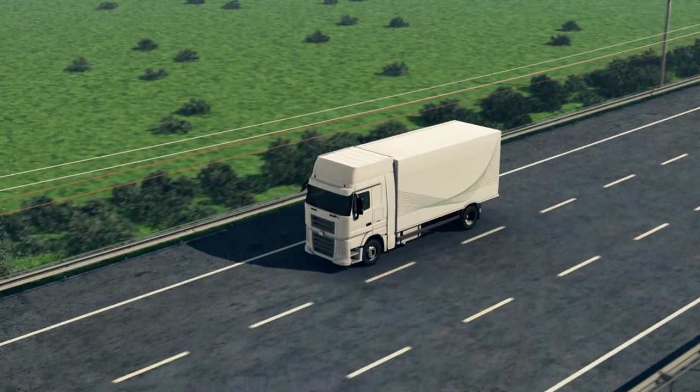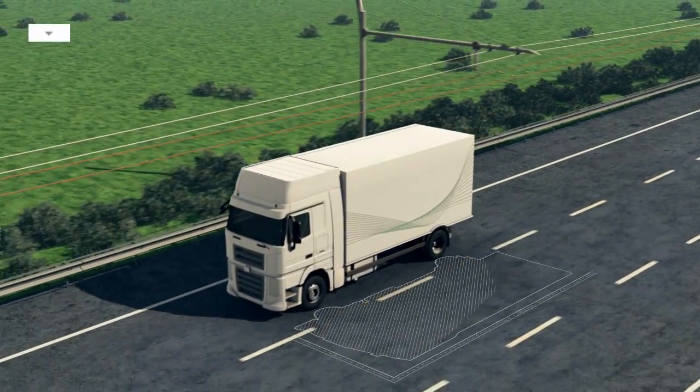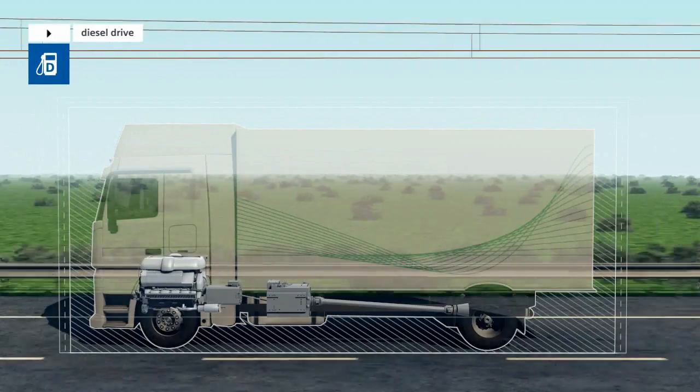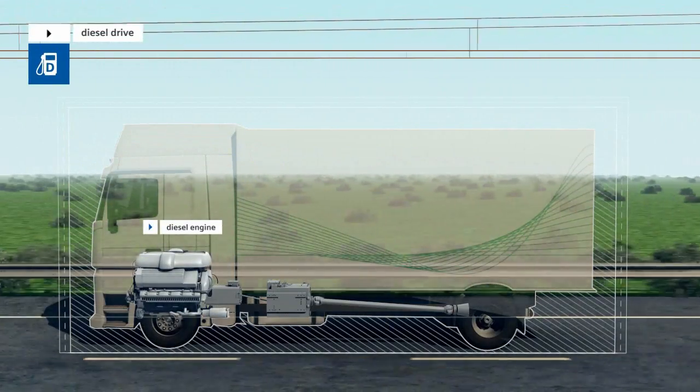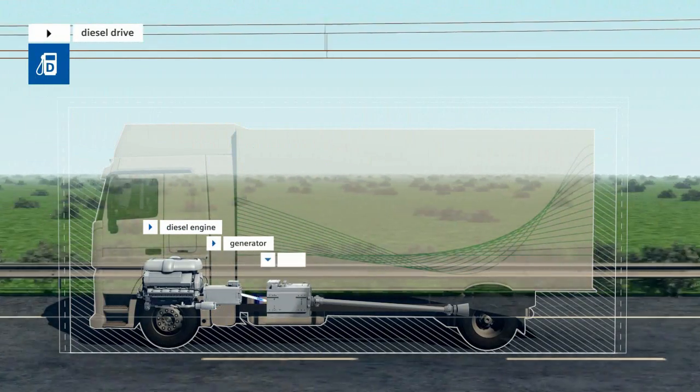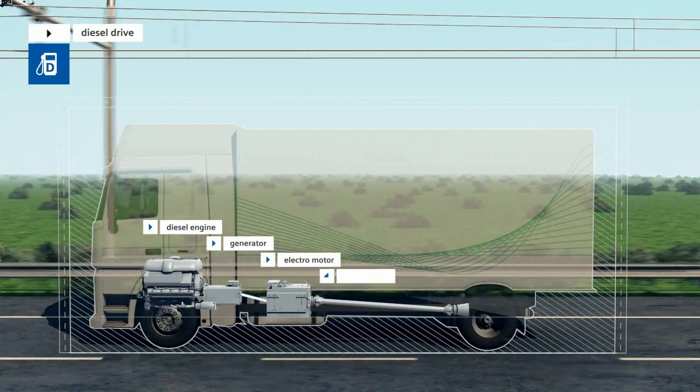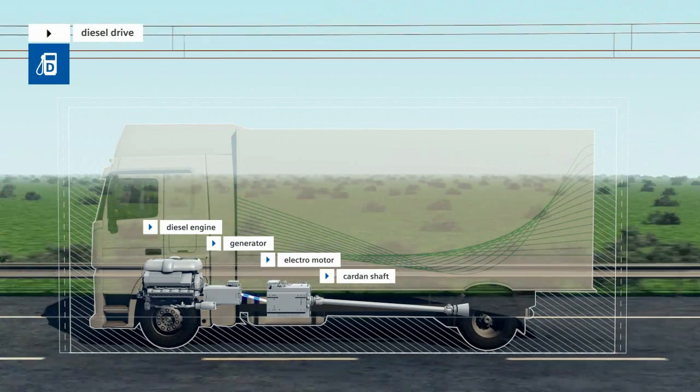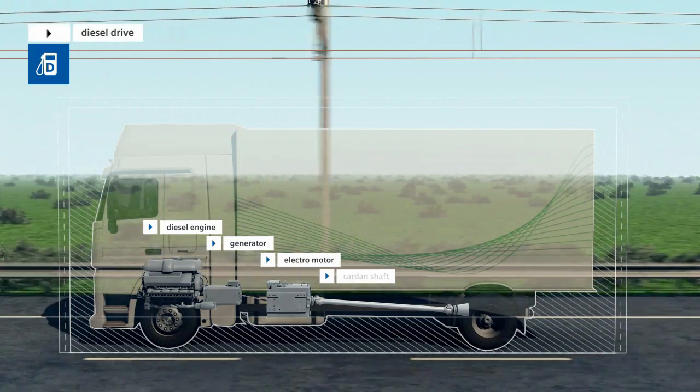Just like conventional trucks, the serial hybrid vehicles from Siemens E-Highway Systems have an internal combustion engine. In diesel operation, mechanical power from the combustion engine is transformed by the generator to supply the downstream electric engine and thus the drive shaft.